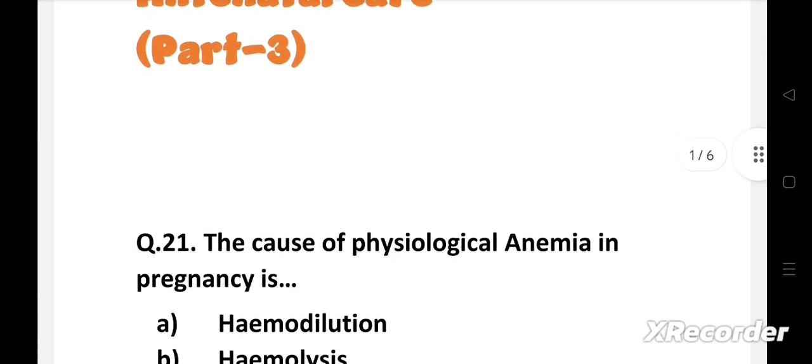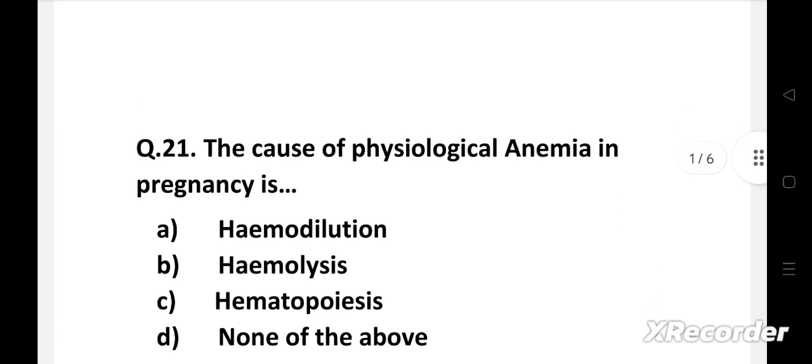Question number 21: The cause of physiological anemia in pregnancy is - option A: hemodilution, B: hemolysis, C: hematopoiesis, D: none of the above.